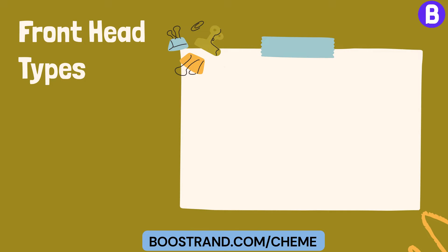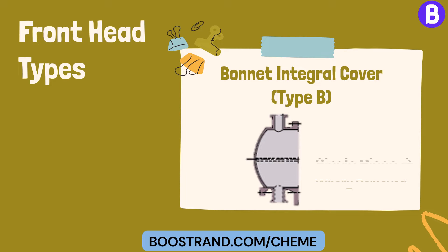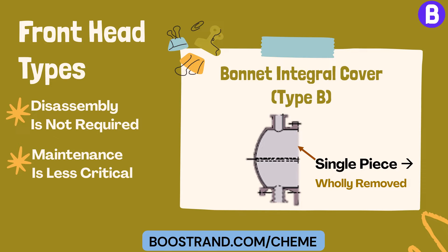They are more expensive than Type B. Bonnet integral cover, Type B: this design incorporates a single-piece bonnet or cover that is an integral part of the shell structure. It is used in applications where frequent disassembly is not required, and maintenance is less critical, resulting in a more compact and less expensive design.